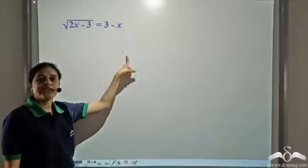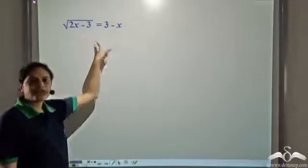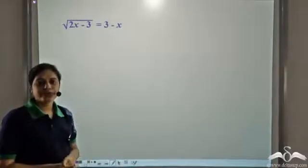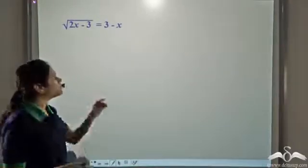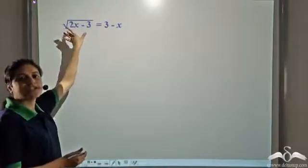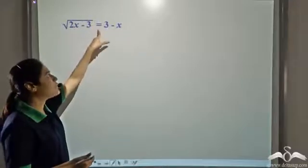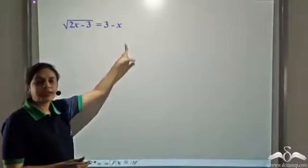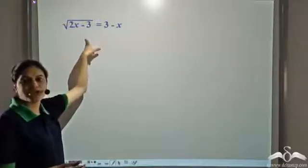We see that we have a square root on the left hand side, so first let us get rid of this square root. In order to get rid of this square root, we need to square it. But if we square the left hand side, in order to maintain the equality, we need to square the right hand side as well. So we square both sides of this equation.